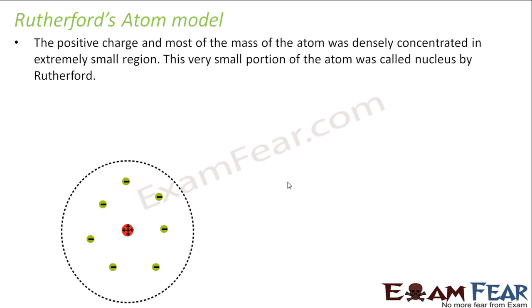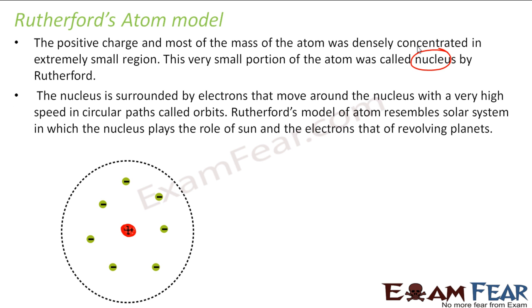Rutherford gave an atom model. He said the positive charge and most of the mass is in a very small region, and this region was called the nucleus. Rutherford gave the word nucleus. He said this nucleus is surrounded by electrons that move around the nucleus at very high speed.